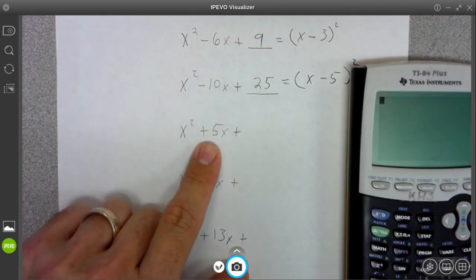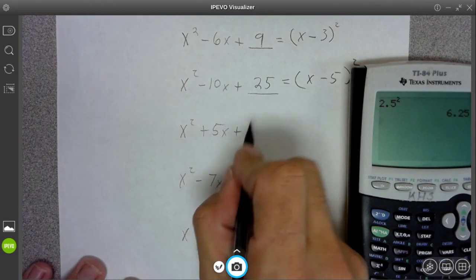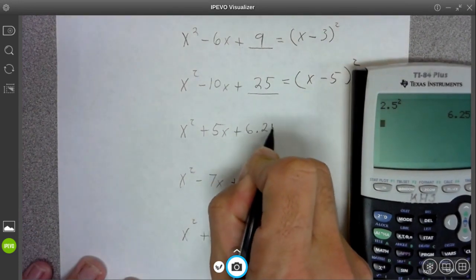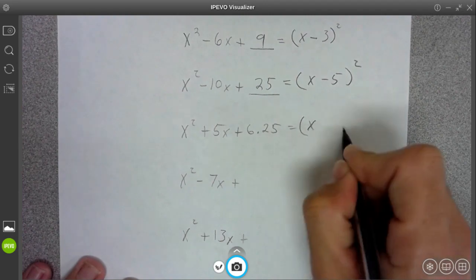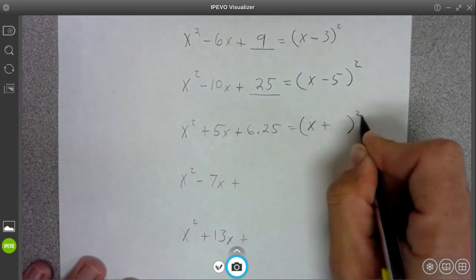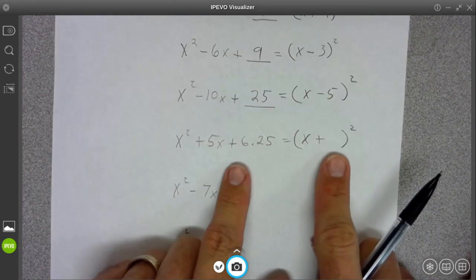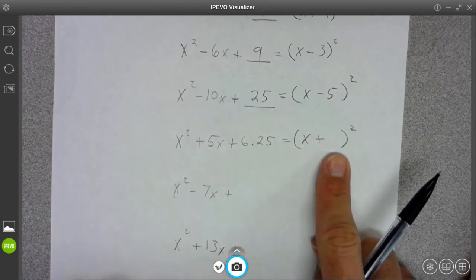Half of 5 is going to be 2.5, but then you're going to square it, so you get 6.25. And when you factor it, it's going to be x plus something squared. And remember, the key is that it's just going to be half of this number.